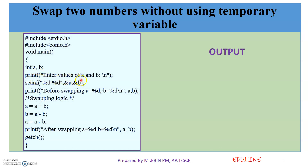In the first printf statement, we prompt: enter values of A and B. Then we use scanf to read and save the input values before swapping.